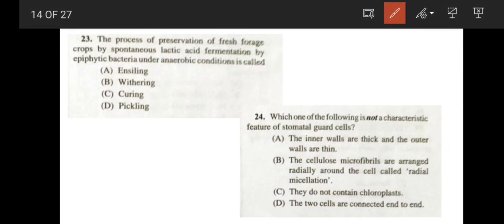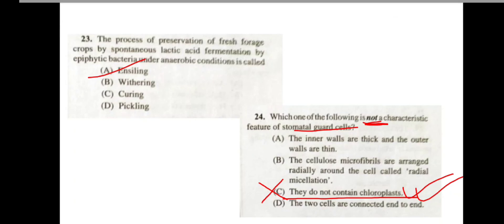Coming to the question number 23. The process of preservation of fresh forage crops by spontaneous lactic acid fermentation by epiphytic bacteria under anaerobic condition is known as ensiling or ensilage, option A. Now, which one of the following is not a characteristic feature of stomatal guard cell? The inner walls are thick and the outer walls are thin, right. The cellulose microfibrils are arranged radially around the cell called radial micellation, yes, it is also right. They do not contain chloroplast. It is not correct. So our correct answer is option C because obviously the guard cells contain chloroplast.